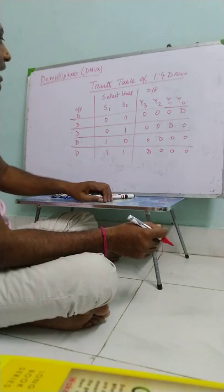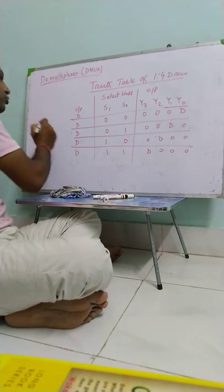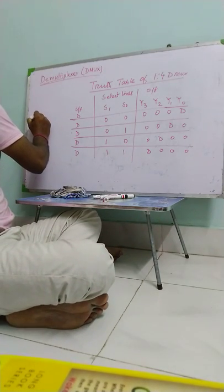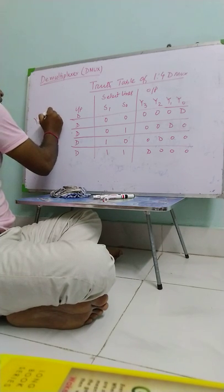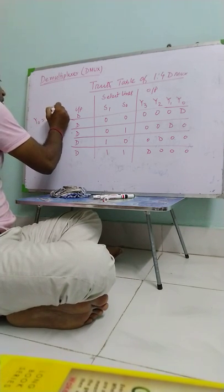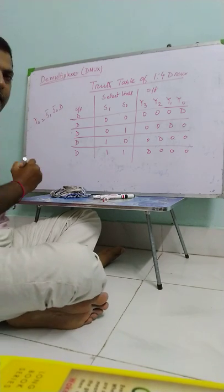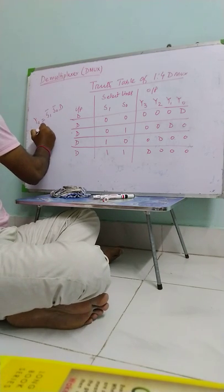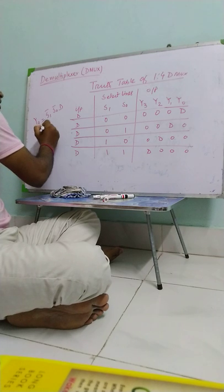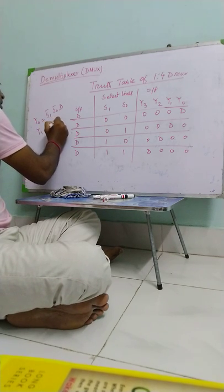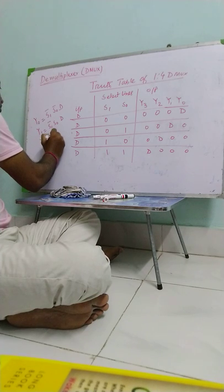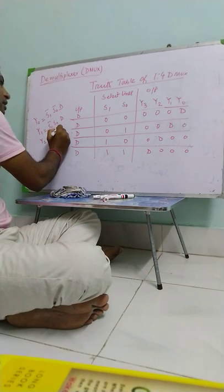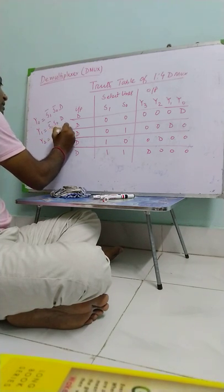So we find the expression of these outputs. Y0 is equal to S1 bar, S0 bar, D. Y1 is equal to S1 bar, S0, D. And Y3 is equal to S1, S0, D.